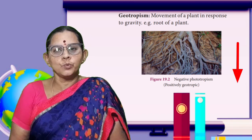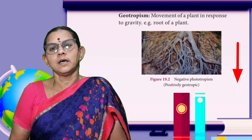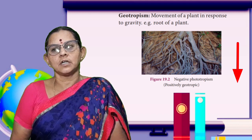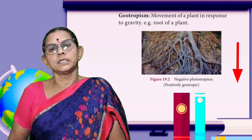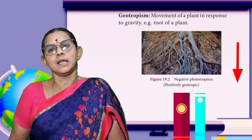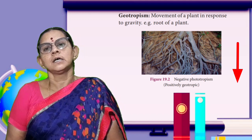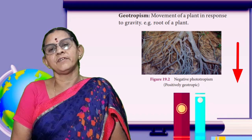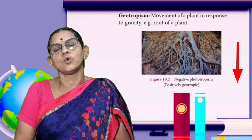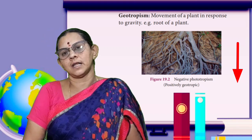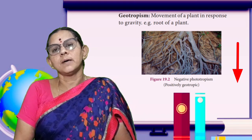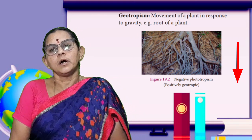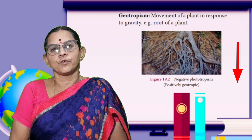Roots grow towards the gravitational force. That is called geotropism. Gravitational force is the stimulus, so the example is the growth of roots downward into the ground.